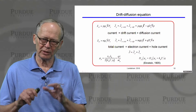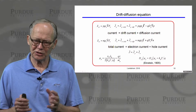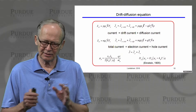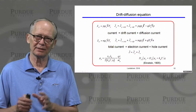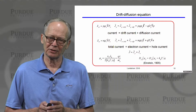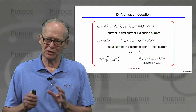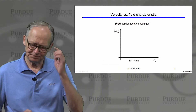So this is our summary of current transport for traditional semiconductor devices — typically large, operating in the diffusive limit.